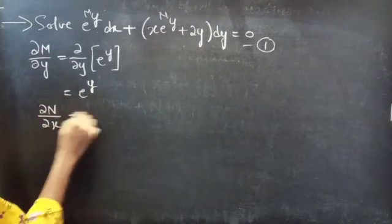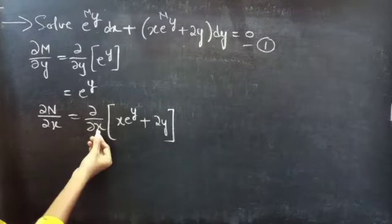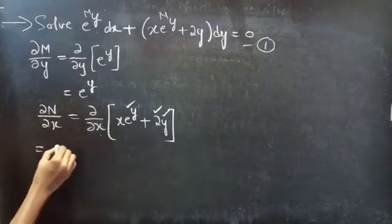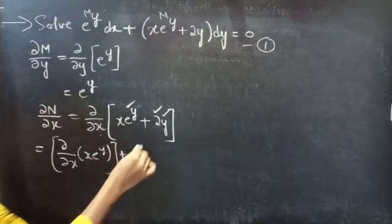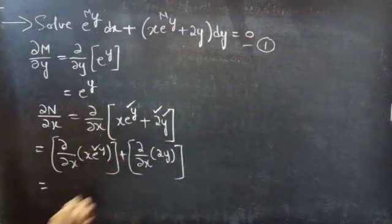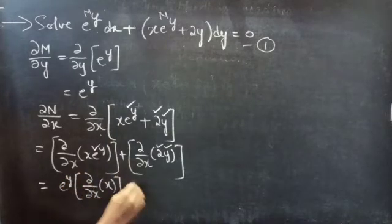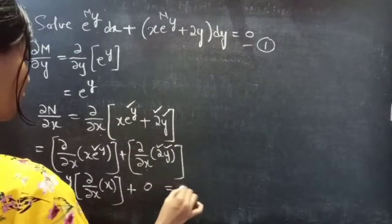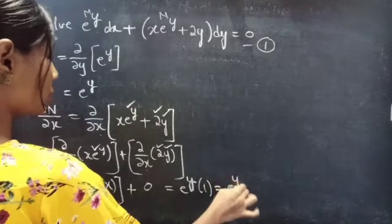Now let's find the partial derivative of N with respect to x: dou by dou x of x into e power y plus 2y. Since we are doing the partial derivative with respect to x, e power y, y, and 2 will be constant. This equals to e power y into the partial derivative of x with respect to x, which is 1, plus the partial derivative of the constant term with respect to x, which is 0. So this equals to e power y.